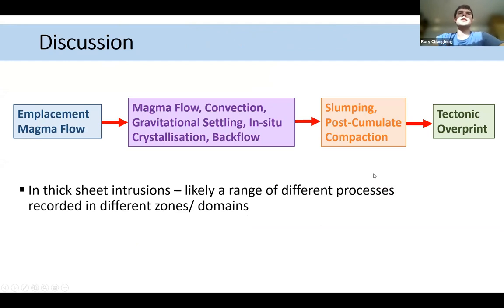So to discuss what these results might be, the key thing to bear in mind is that AMS is recording the last process to be experienced by these rocks. And so this might be the original emplacement of the dike, but then you might have subsequent overprinting through convection or settling, slumping, compaction, or tectonic overprint. In this area, tectonic overprint is not seen as being a big issue because essentially this area has been tectonically undisturbed since the original intrusion in the Gardar period. But certainly we're likely seeing in these thick sheet intrusions a range of different processes being recorded in the different sections or domains within the intrusion.